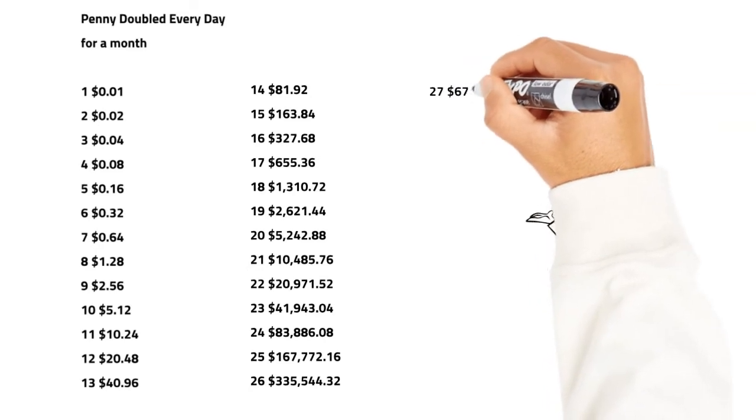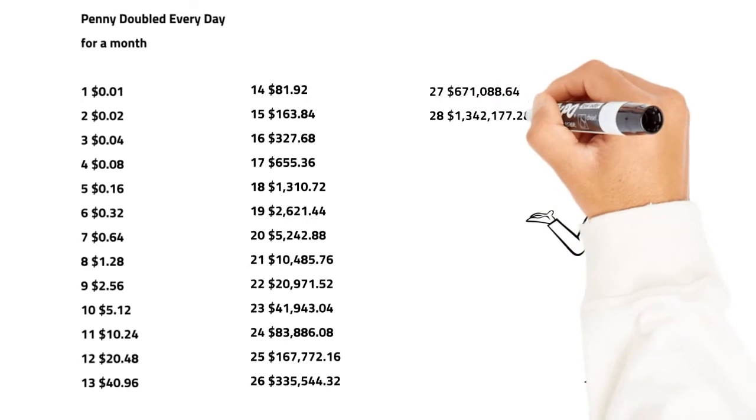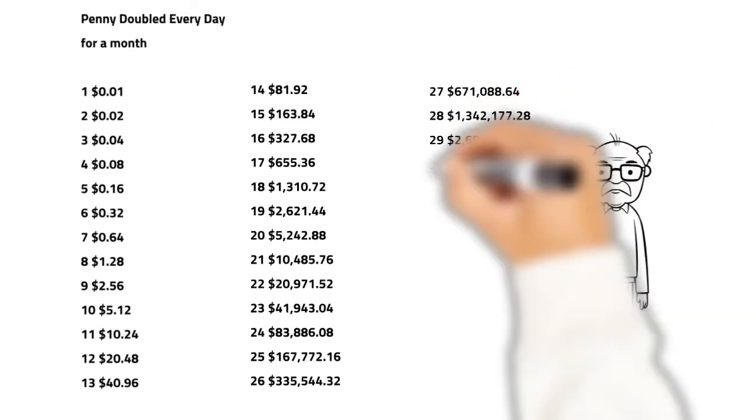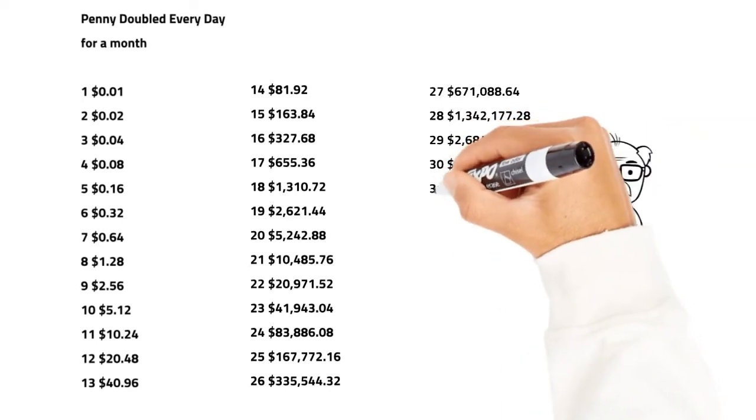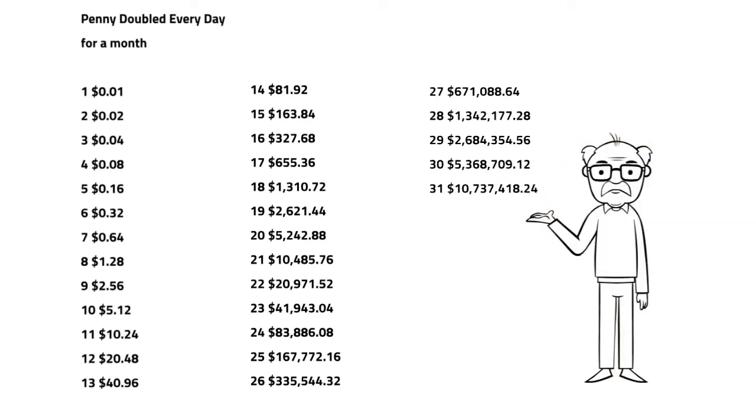Day 27, $671,088.64. Day 28, $1,342,177.28. Day 29, $2,684,354.56. Day 30, $5,368,709.12. Day 31, $10,737,418.24.